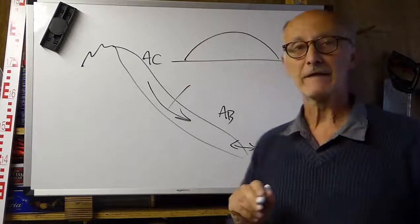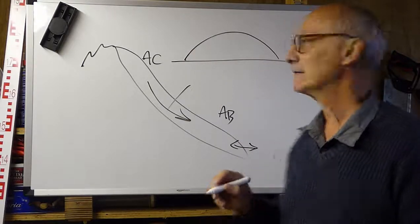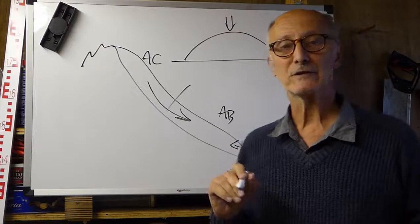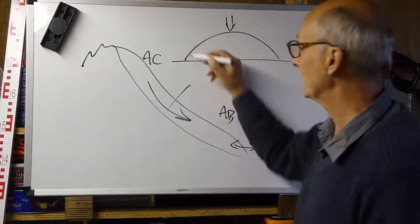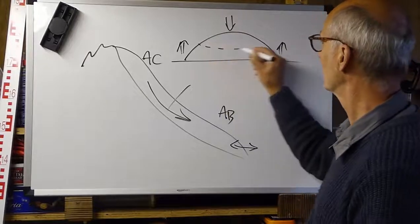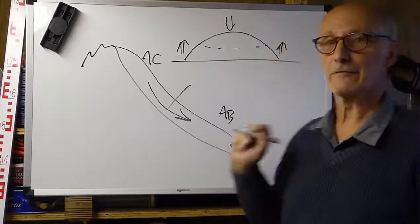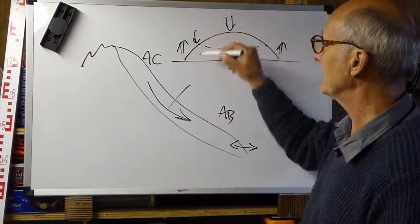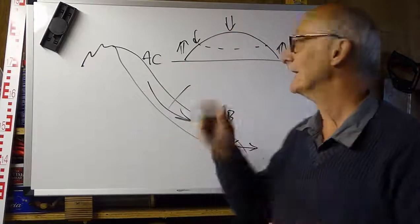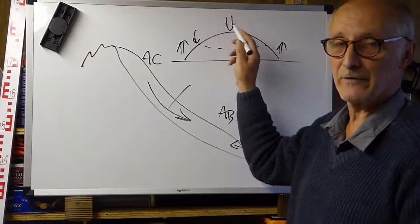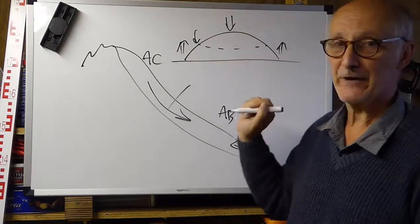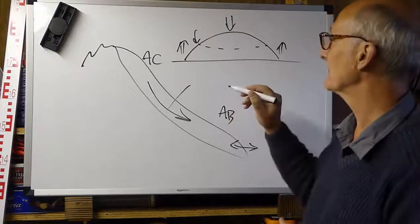You can do something very similar for an ice sheet situation, where the accumulation zone is in the central area and the ablation zone is around the perimeter. The equilibrium line altitude runs somewhere in between the area in the middle where there's more accumulation than ablation, and the area around the edge where there's more ablation than accumulation.